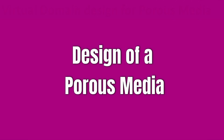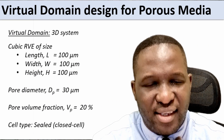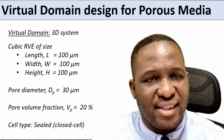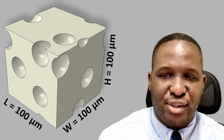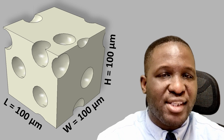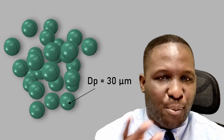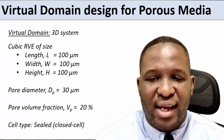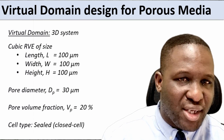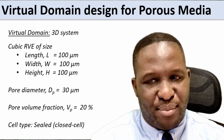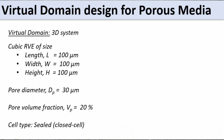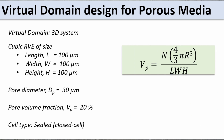Now let's think about the design of a porous media. The first thing in this case is that we're going to be looking at a 3D system. Our representative volume element will be a cubic RVE with dimensions of 100 by 100 by 100 microns. We've chosen a uniform porosity size of 30 microns in diameter. Our pores will be spherical in shape, and the void volume fraction — a void volume fraction of 20% — as our porosity for this material.